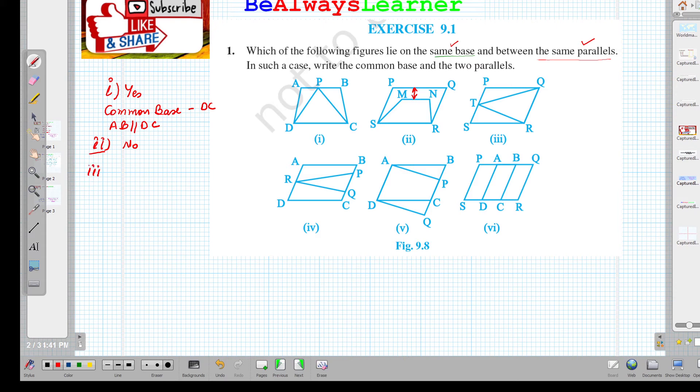Third part: we have quadrilateral SRQP. If we consider the common base here, SR is parallel to this line, and this is between the parallel lines also. So we can say yes, this is on the same base and between the same parallel lines. The common base is QR, and SP is parallel to QR.